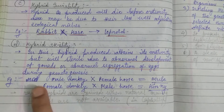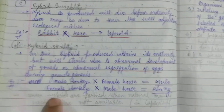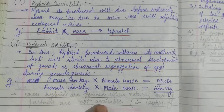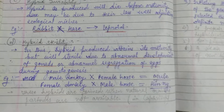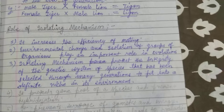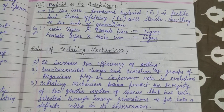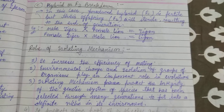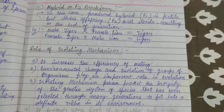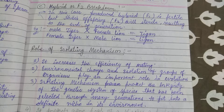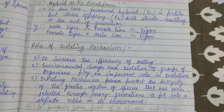A classic example of hybrid sterility is the mule — a cross between a male donkey and a female horse. In hybrid breakdown, the produced hybrid is fertile, but the F2 offspring result in breakdown of the generation. For example, a cross between a male tiger and a female lion produces a hybrid called a tigon.